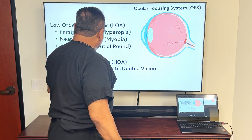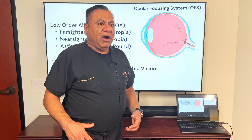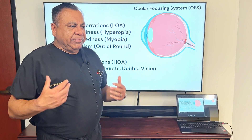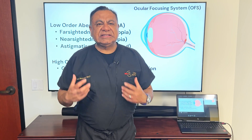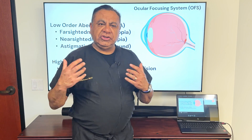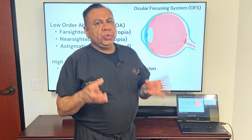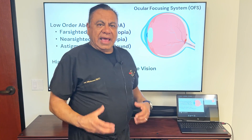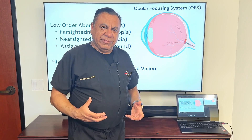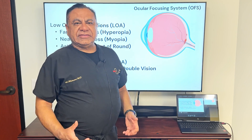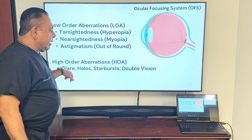Then there are higher-order aberrations — the lumps, bumps, wrinkles, defects, and imperfections that scatter light. Because you were not made in a factory, you were made in a womb, which means the eye is asymmetric and has flaws. Those are what we call higher-order aberrations.